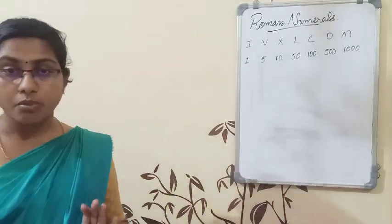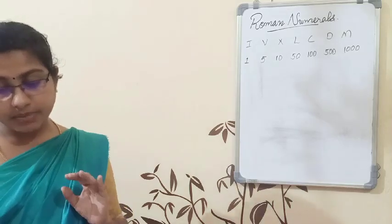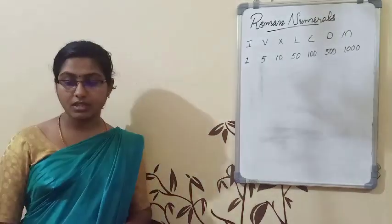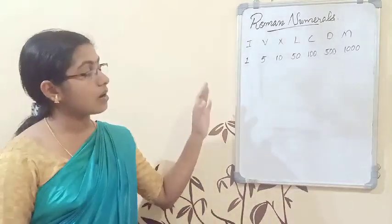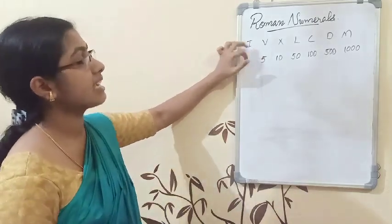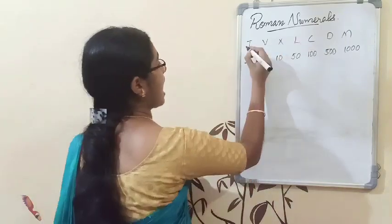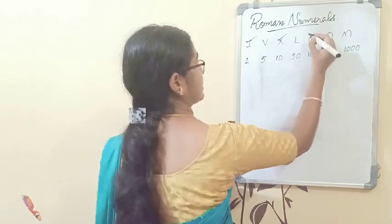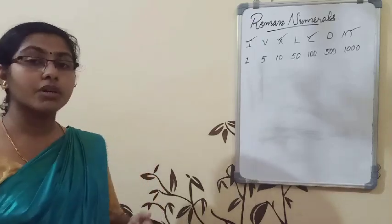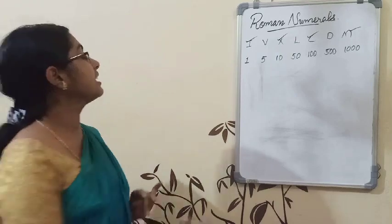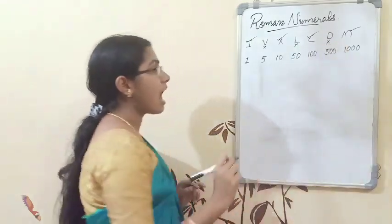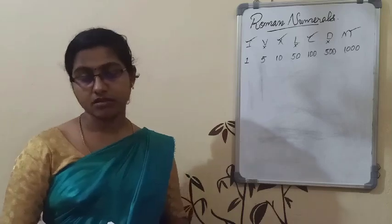Now, a Roman symbol cannot be repeated more than three times. In Roman numerals, I, X, C, and M can be repeated, but only a maximum of three times. However, the Roman symbols V, L, and D are never repeated.